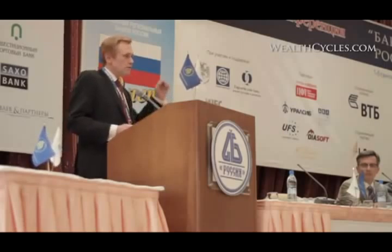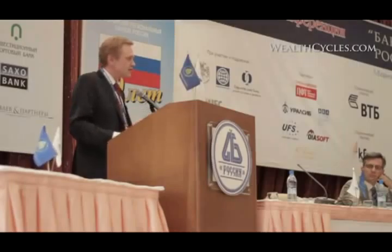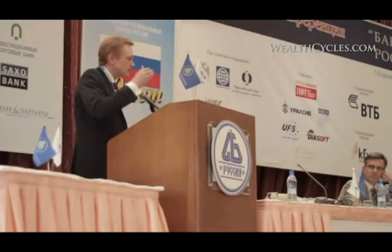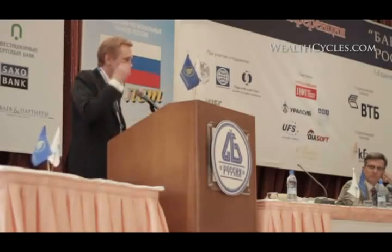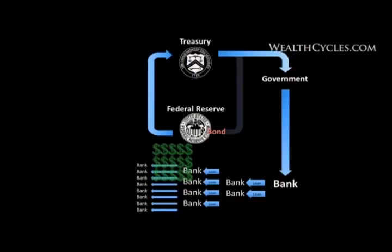Then that bank takes 90% of that deposit and loans them out, and now there are 271 rubles in existence. This process repeats, and under a 10% reserve ratio — you wouldn't push your balance sheet right to the edge because you could get shut down — but if you go right out to the reserve ratio, 100 rubles can create 1,000.